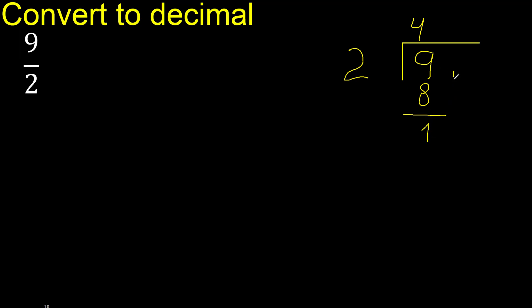There is no number that goes down, therefore complete. Always complete with 0 and a decimal point.